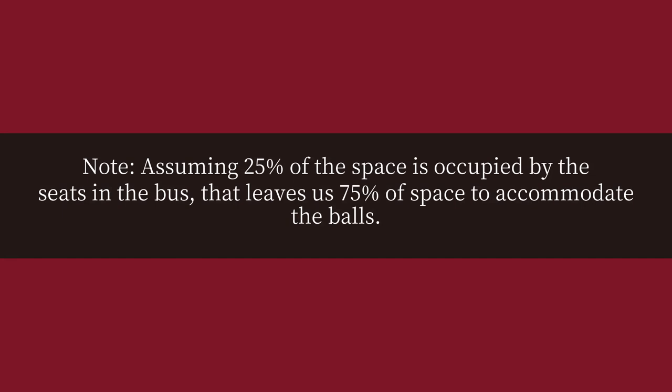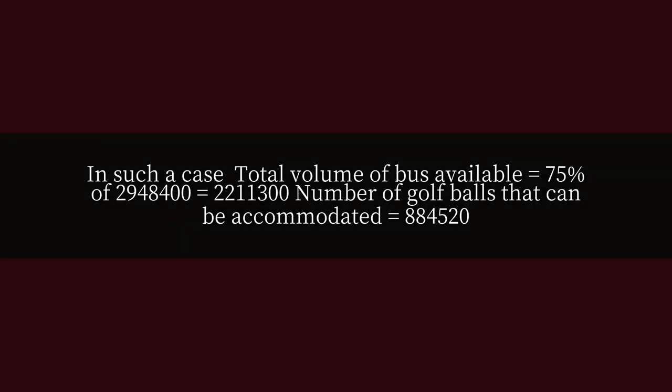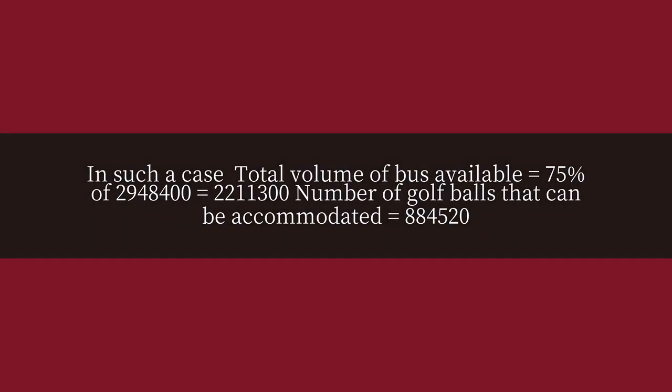Note: assuming 25% of the space is occupied by the seats in the bus, that leaves us 75% of space to accommodate the balls. In such a case, total volume of bus available equals 75% of 2,948,400 = 2,211,300, and the number of golf balls that can be accommodated equals 884,520.